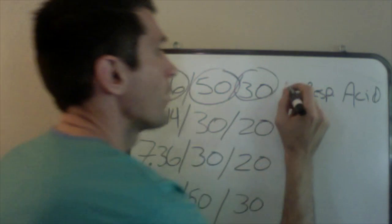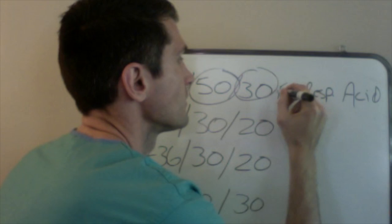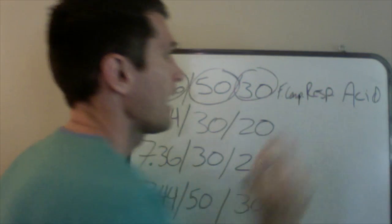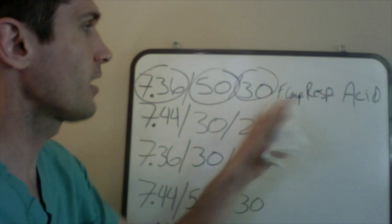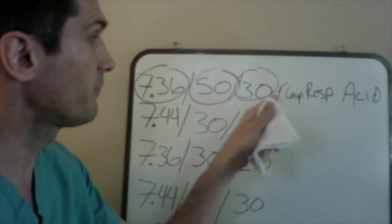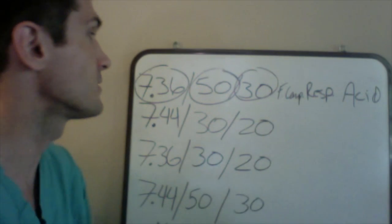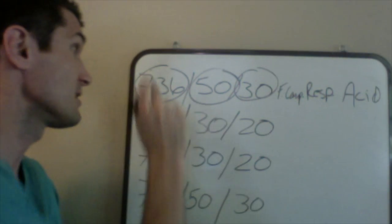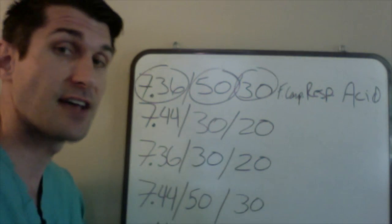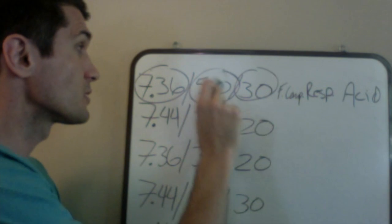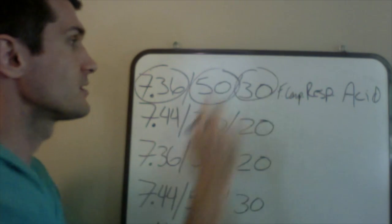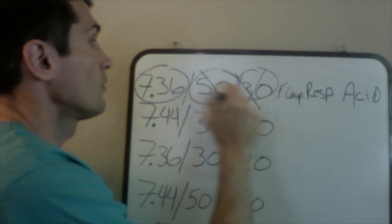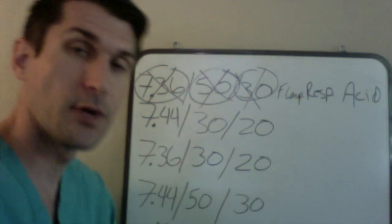So I'm going to put 'fully compensated respiratory acidosis.' Fully compensated is based on the fact that the pH, although erring on the side of acidosis, is within normal range. We established who was responsible — the CO2 — and we established that bicarb helped the situation. So we're done with that one.